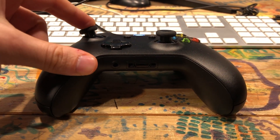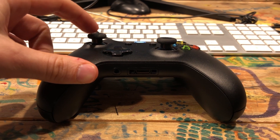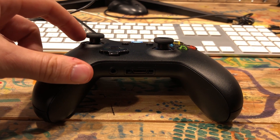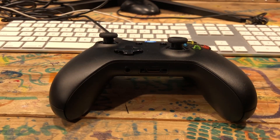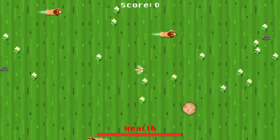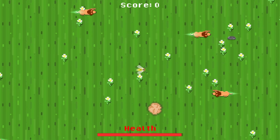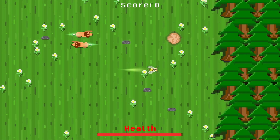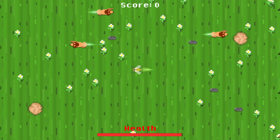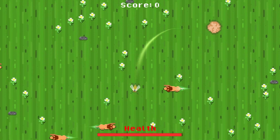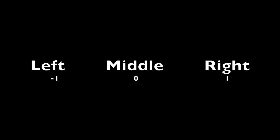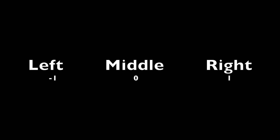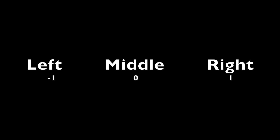Control sticks, however, can be in a lot of different states. They can be in the middle, all the way to the right, down and to the left, a little bit right and a little bit up. We need to account for all of those things. If the player moves the control stick a little bit to the right, the character should move a little bit to the right; if they push it all the way to the right, the character should move faster. When the control stick is in the middle, it gives us zero; when it's on the right, it gives us one; all the way to the left gives negative one; and in between gives numbers like one half or negative one quarter. The same is true for up and down.